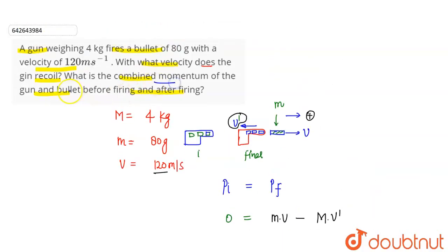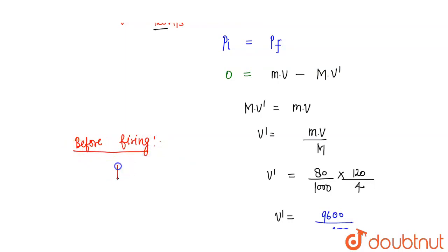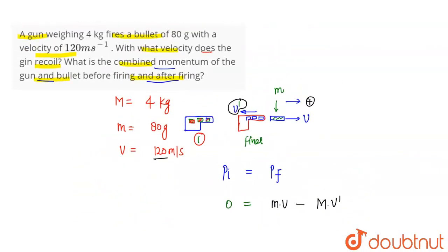What is the combined momentum of the gun and bullet before and after firing? Before firing, both the gun and bullet were at rest. The bullet was inside the gun, so both were at rest. Momentum before firing of the system — gun and bullet together — was zero, since both were at rest.